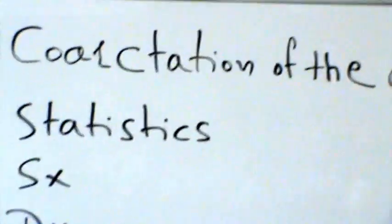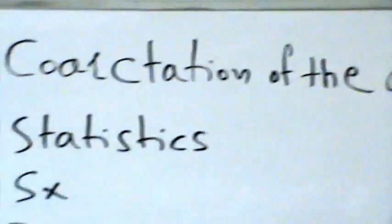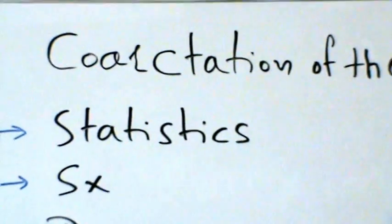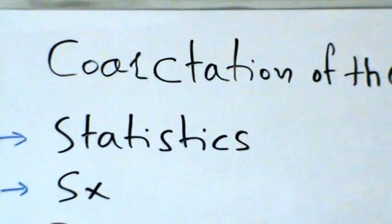Coarctation of the aorta is congenital, focal, narrowing of the thoracic aorta, usually distal to the left subclavian artery.